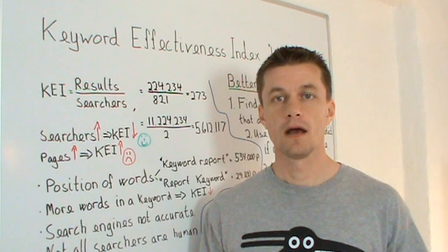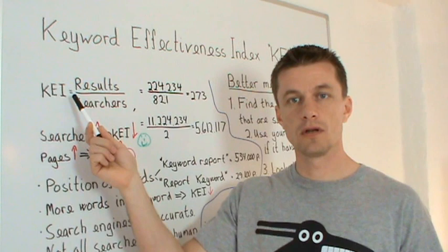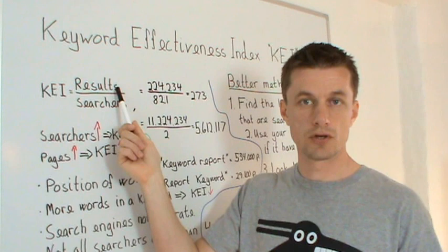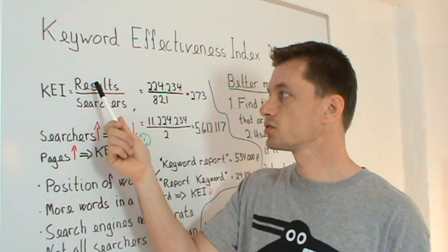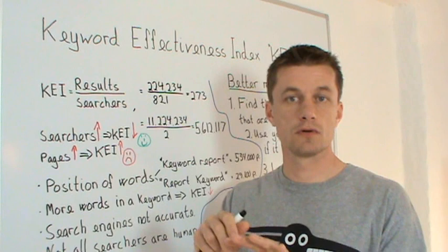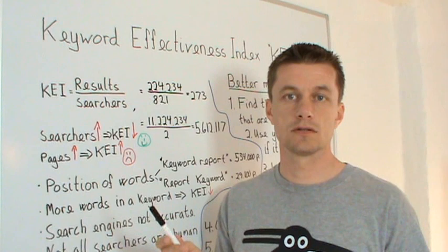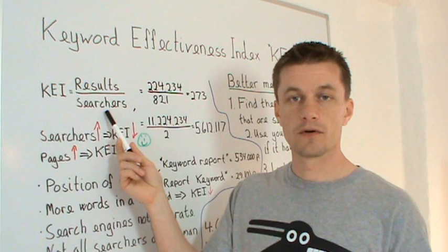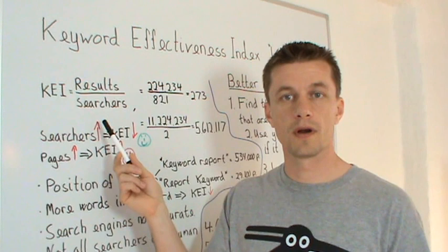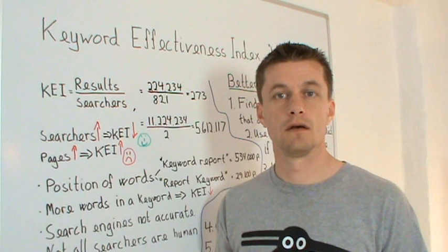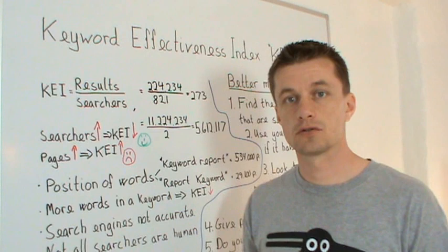Let's go through how we calculate KEI and some of the drawbacks. KEI is calculated quite easily and simply. You take the number of results in a search engine database and divide by the number of searches. The results or pages you can probably find in several places, but if you search in Google it shows the number of results — pages that are in the index for that keyword. Then you divide by the number of searches, which you can find in the AdWords free keyword tool.